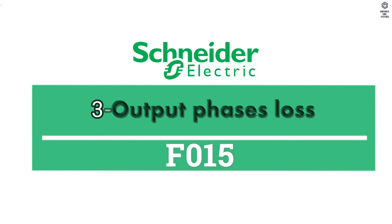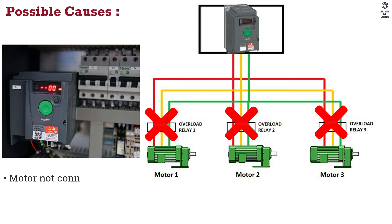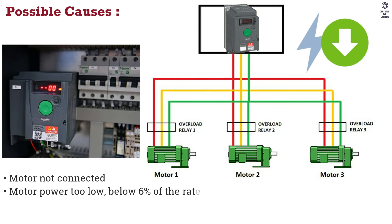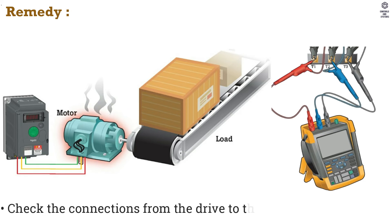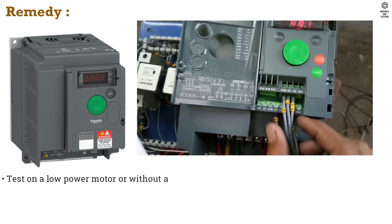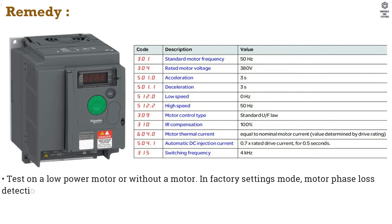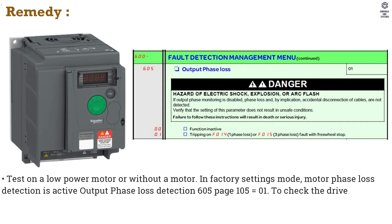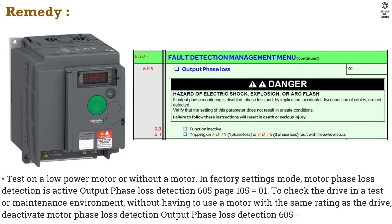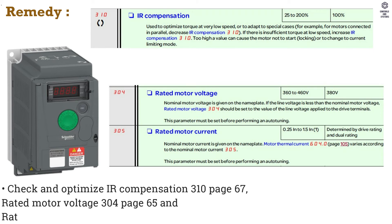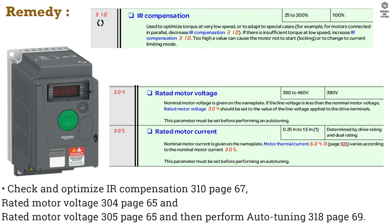F015 Output Phase Loss. Possible Causes: Motor Not Connected. Motor Power Too Low, below 6% of the Rated Drive Current. Output Contactor Open. Transient Instability in the Motor Current. Remedy: Check the Connections from the Drive to the Motor. Test on a Low Power Motor or Without a Motor in Factory Settings Mode. Motor Phase Loss Detection is Active — to check the drive in a test or maintenance environment without having to use a motor with the same rating as the drive, deactivate Motor Phase Loss Detection. Check and Optimize Recompensation of Rated Motor Voltage and then Perform Auto Tuning.